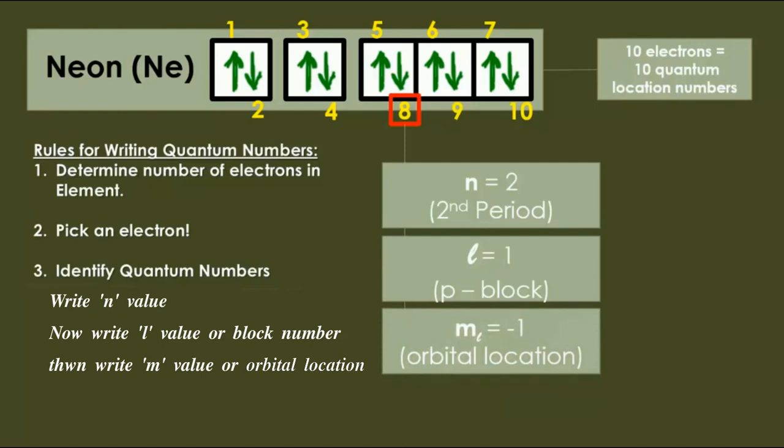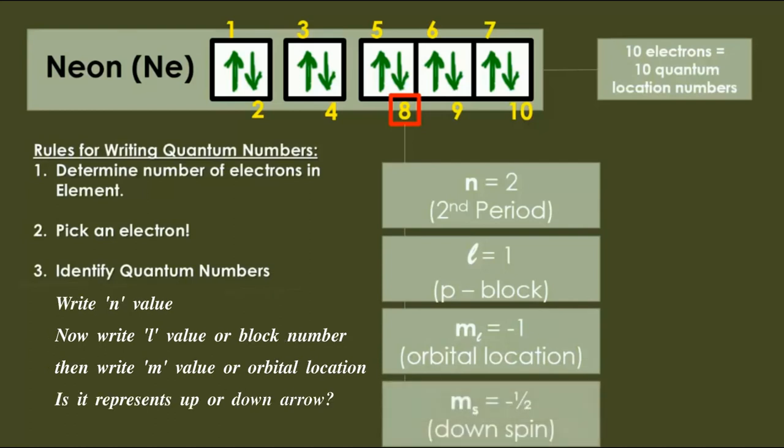Or orbital location. In p block there are px, py, and pz, that means m values are minus 1, 0, and 1. Look here, eighth electron is in minus 1 orbital, therefore m equal to minus 1. Next, does it represent up arrow or down arrow? Look here, it is denoted by down arrow, that means we have to write spin value as minus 1 by 2.